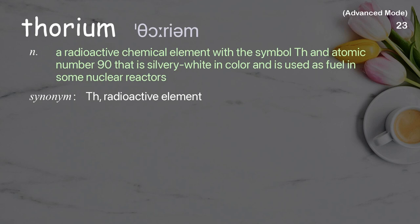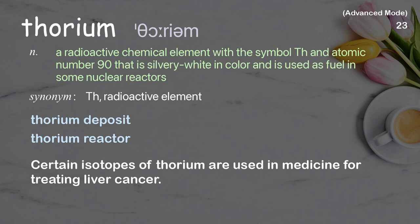Thorium: A radioactive chemical element with the symbol Th and atomic number 90 that is silvery white in color and is used as fuel in some nuclear reactors. Examples: Thorium deposit, thorium reactor. Certain isotopes of thorium are used in medicine for treating liver cancer.